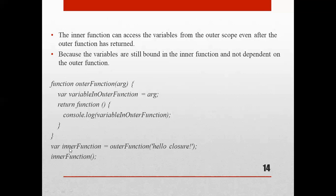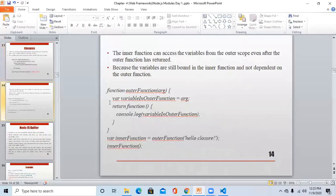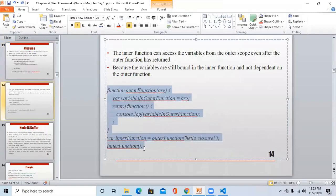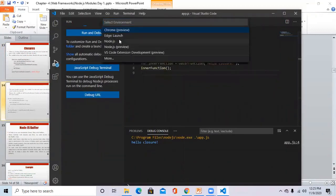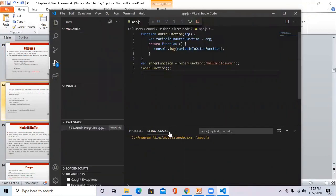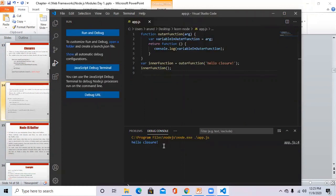This variable 'inner function' now acts as a function. Because we assigned the outer function — called with the parameter — to that variable, the variable will act as a function and we call it like a function. Let's copy that code and execute it. You can see it will print 'hello closure'.